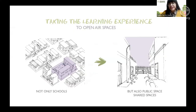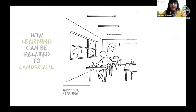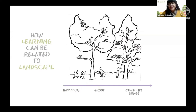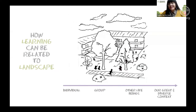We want to take the learning experience not only to schools but also to public space and to shared spaces. We think about how learning can be related to landscape. In a classroom it may be easier to have individual learning, but in the playground we have group learning, and in the garden we become aware of other living beings, which makes us learn about our great and diverse contexts.